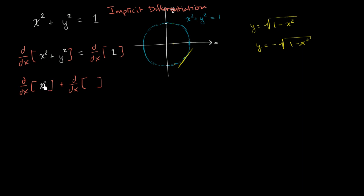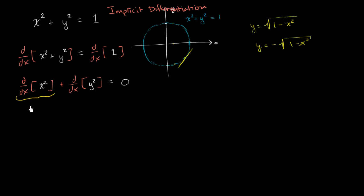So we have x squared and y squared, and this is going to be equal to the derivative with respect to x of a constant — this isn't changing with respect to x — so we just get 0. Now, the derivative with respect to x of x squared — we've done this many times — by the power rule it's going to be 2 times x to the first power, or just 2x.